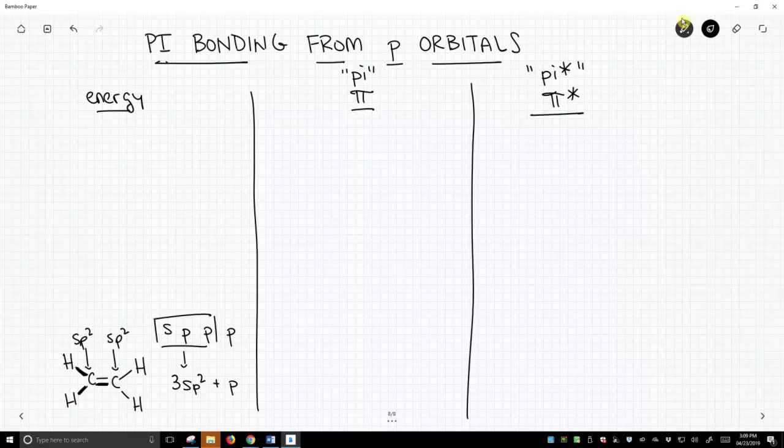But what's going on with the p orbital? Well, the p orbital is making the second bond between these two carbons. And I've drawn that as a big fat bond. It's still just one bond, and that is our pi bond.